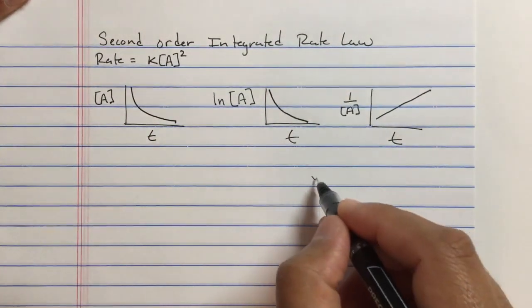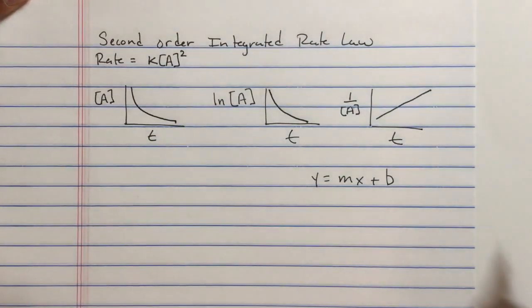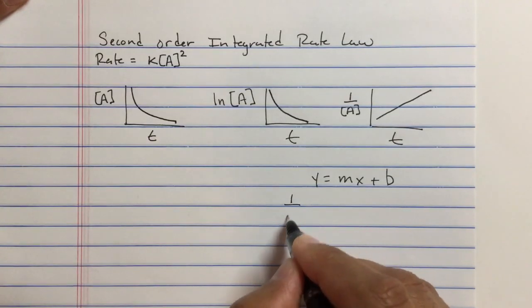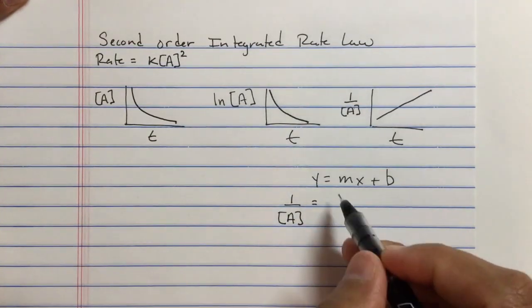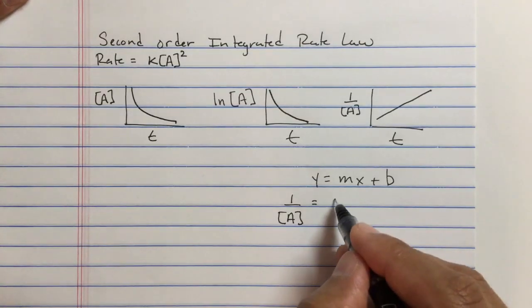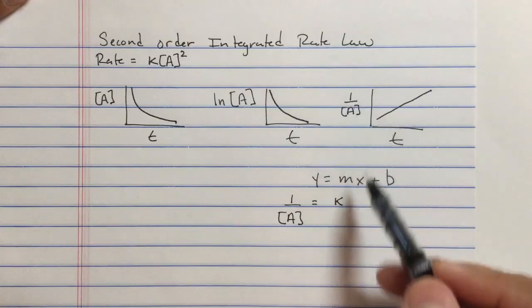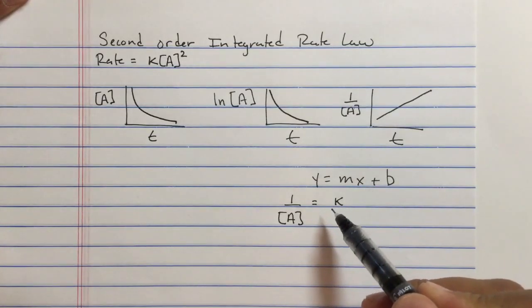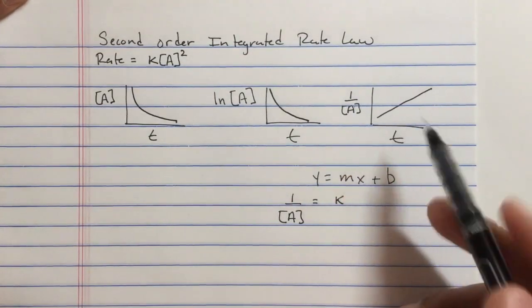If we take our y equals mx plus b, y is the y-axis, 1 over [A]. m is the slope, which is the rate constant, and it's a positive slope, so this number is positive. Remember, for zero and first order kinetics, those integrated rate laws had the negative sign because those straight lines were going down. This line is going up.